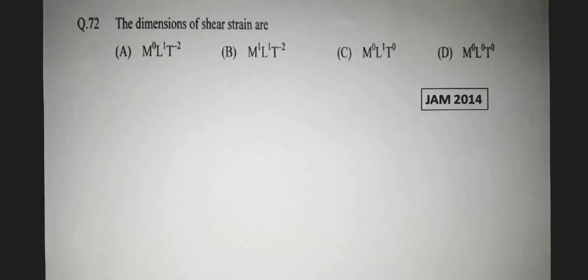The dimensions of shear strain are: Option A, M to the power 0, L to the power 1, T to the power minus 2. Option B, M to the power 1, L to the power 1, T to the power minus 2. Option C, M to the power 0, L to the power 1, T to the power 0. Option D, M to the power 0, L to the power 0, T to the power 0.